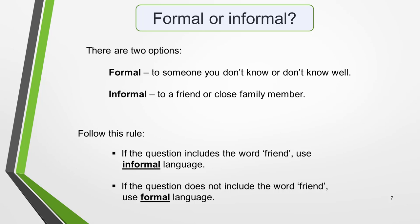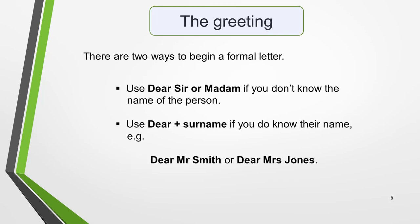This leads us on to the opening of the letter — the greeting. There are two ways you can begin a formal letter. Use 'Dear Sir or Madam' if you don't know the name of the person you're writing to. Or use 'Dear' and surname if you do know their name — for example, 'Dear Mr Smith' or 'Dear Mrs Jones'. It's likely that you would not know the name of the hotel manager, although the friend might have told you when they recommended the hotel. So if you want to use a surname, just make one up. If you were writing an informal arrangement letter to a friend, you would use their name — for example, 'Dear John'.